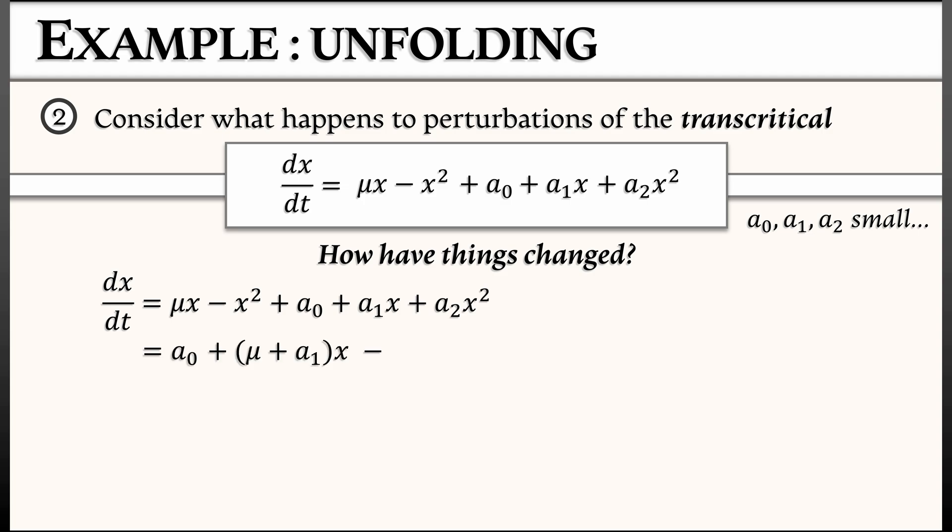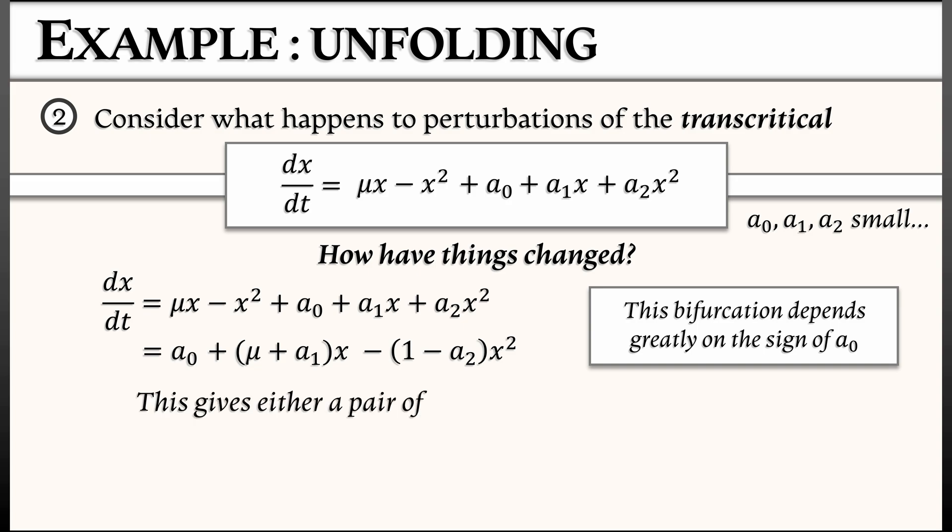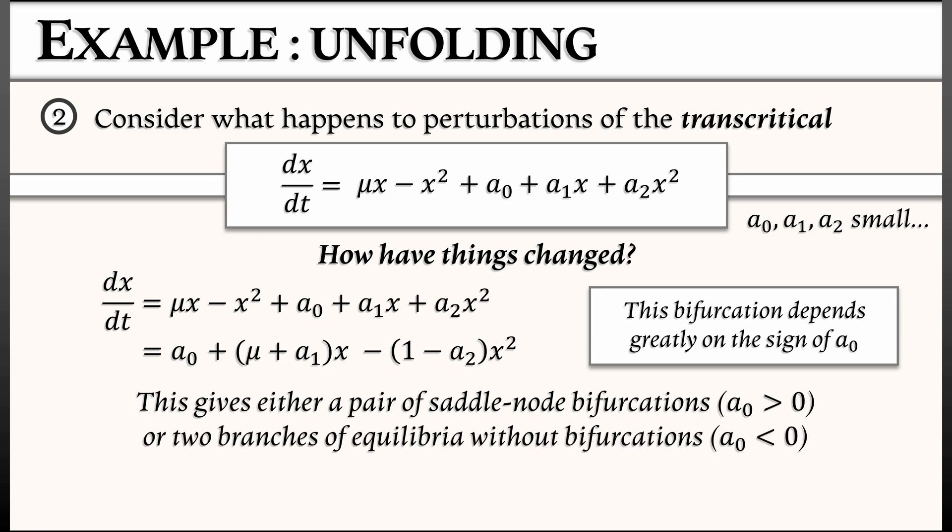But now this bifurcation depends greatly on the sign of that zeroth order term a₀. If a₀ is positive, then this gives us a pair of saddle node bifurcations. One of them opening up, one of them opening down. On the other hand, if a₀ is negative, then this gives us two separate branches of equilibria. One stable, one unstable, and no bifurcation. That bifurcation is completely gone. We've perturbed it away.